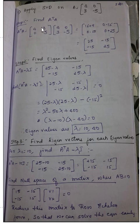When you multiply first row with first column, first row with second column, second row with first column, second row with second column — this is the value you get. This is A transpose A.